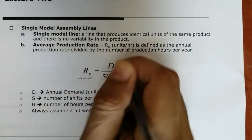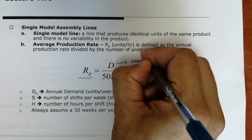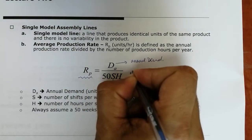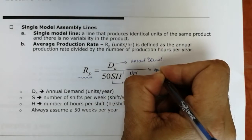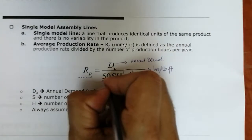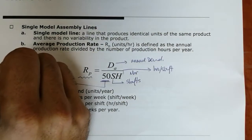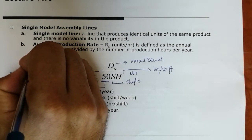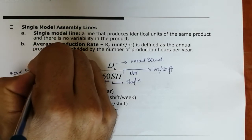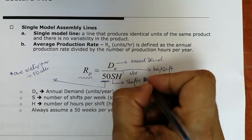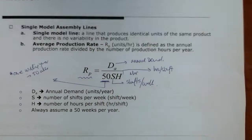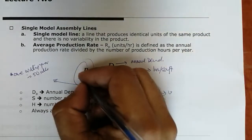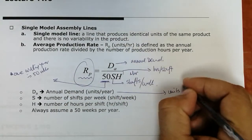The production rate is equal to the annual demand divided by the number of shifts and number of hours per shift, assuming one working year is 50 weeks. So here, number of shifts per week gives us the production rate RP, which is always in units per hour.